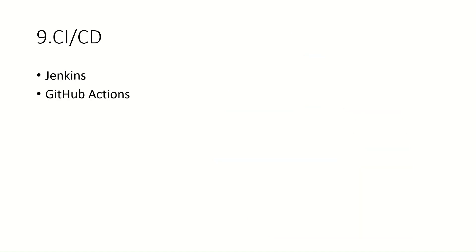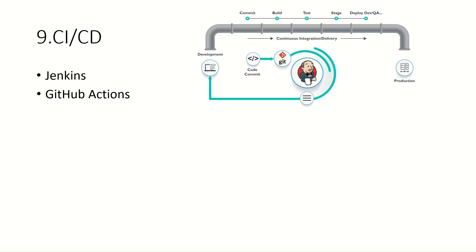The ninth tool is the CI/CD tool, which is either Jenkins or GitHub Actions. Let's say you have developed your application and created the Docker image, and you want to automatically test and deploy your application. For that, you should create a pipeline, which you can create in Jenkins or GitHub Actions. You can use either of these technologies to create a CI/CD pipeline for your application. Master Jenkins or GitHub Actions for your CI/CD pipeline.